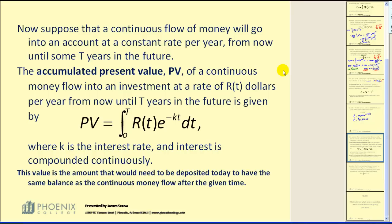of a continuous money flow into an investment at a rate of R(t) dollars per year from now until T years into the future is given by this definite integral. Notice this definite integral has a negative exponent on e. K is the interest rate and it must be continuous interest. This value is the amount that would need to be deposited today to have the same balance as a continuous money flow after the given time.